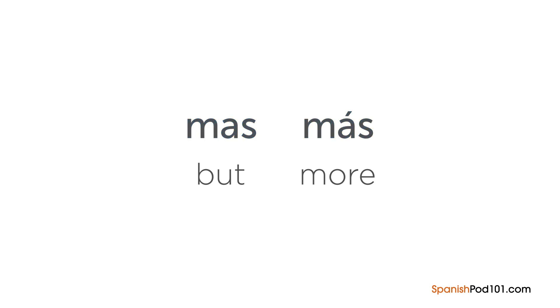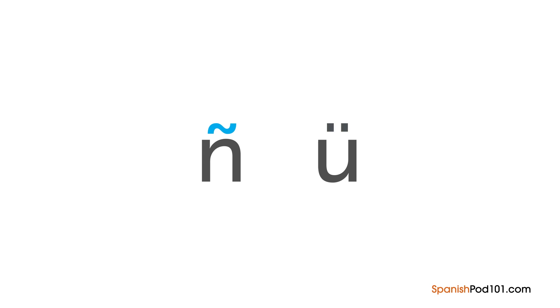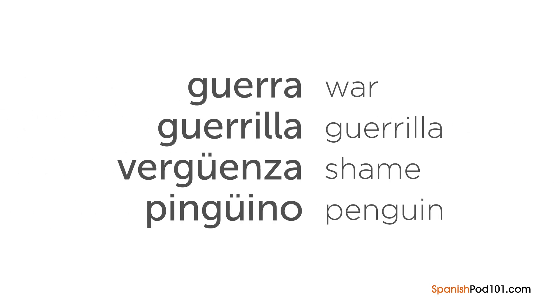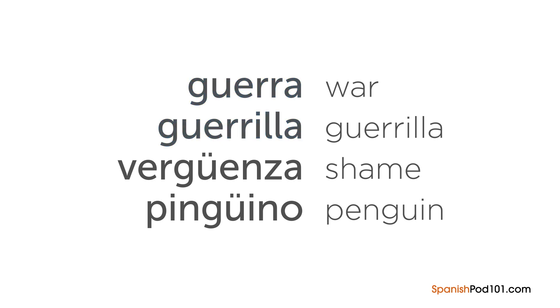So we've covered the main accent mark in Spanish, but what about these ones? Don't be fooled by the first example — even though it might look like an accent, it's just the letter ñ in Spanish. The second example is an accent marker used to indicate that the U should be pronounced. This is because the letter U is usually silent when it comes after the letter G. Notice how the U is silent in the first two examples — guerra, guerrilla — but pronounced in the last two — vergüenza, pingüino. Keep in mind that this accent only occurs in a few words that have the letters G and U together.